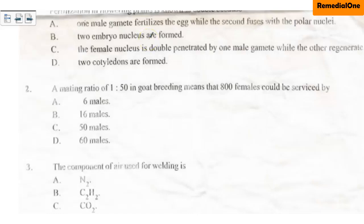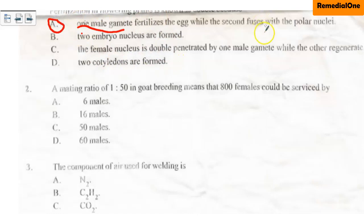Number one: fertilization in flowering plants is known as double because A. one male gamete fertilizes the egg while the second fuses with the polar nuclei. B. two embryonic nuclei are formed. C. the female nucleus is double penetrated by one male gamete while the other regenerates. D. two cotyledons are formed. The correct answer is option A — one male gamete fertilizes the egg while the second fuses with the polar nuclei.